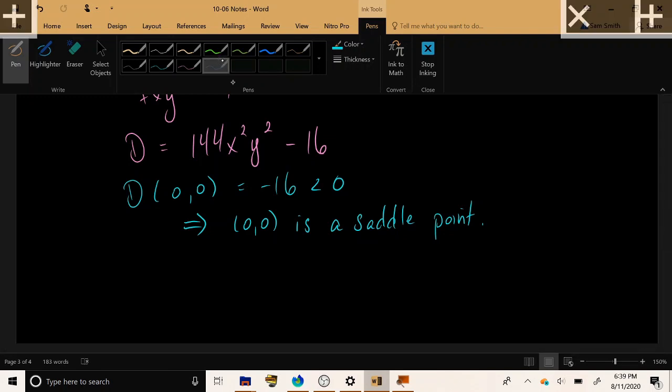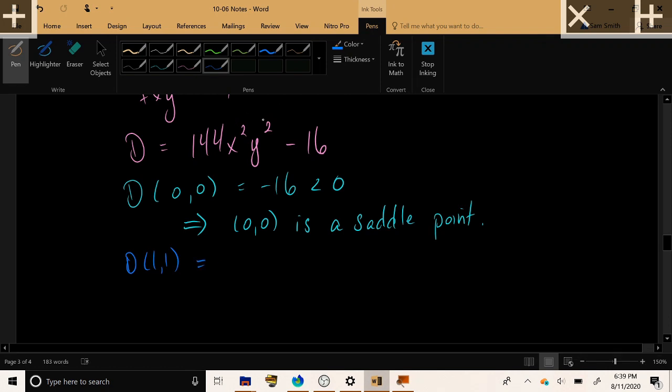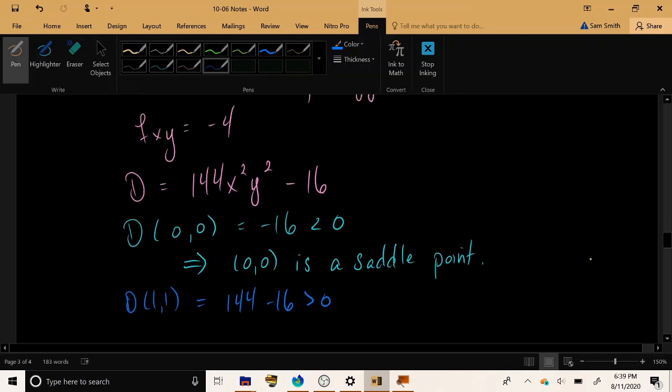Let's test the critical point, D(1, 1), which, plugging in 1 and 1 for x and y, will get 144 minus 16, which is definitely positive. Now, this is not enough to classify (1, 1) as anything just yet. Once the determinant has found to be positive, we need to go back and figure out what is the concavity in the x-direction.